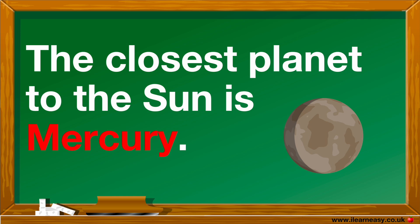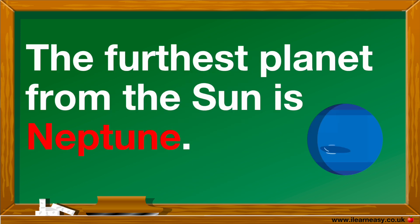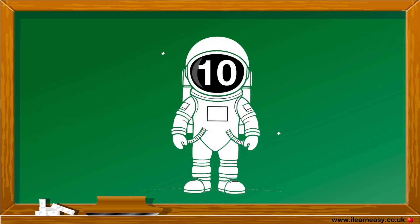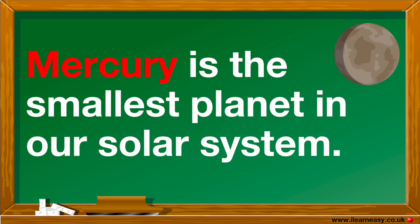The closest planet to the sun is Mercury. The furthest planet from the sun is Neptune. Jupiter is the biggest planet in our solar system. Mercury is the smallest planet in our solar system.